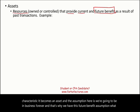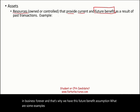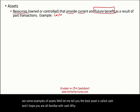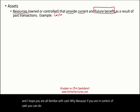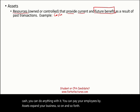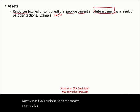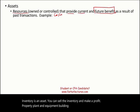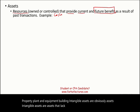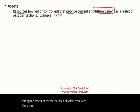What are some examples of assets? The best asset is called cash. If you are in control of cash, you can do anything with it — pay your employees, buy assets, expand your business. Inventory is an asset; you can sell the inventory and make a profit. Property, plant, and equipment, and buildings are assets. Intangible assets are obviously assets — intangible assets are assets that lack physical substance.